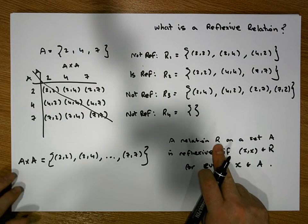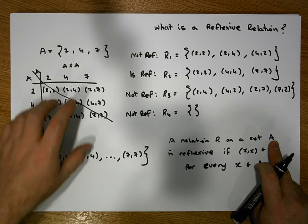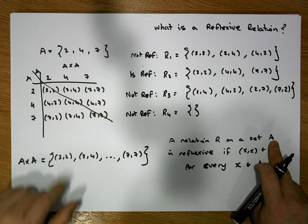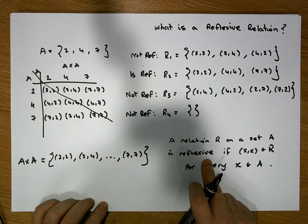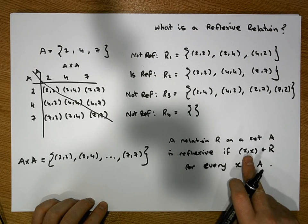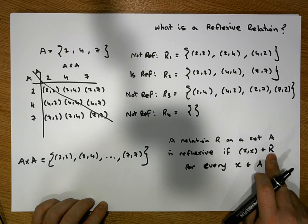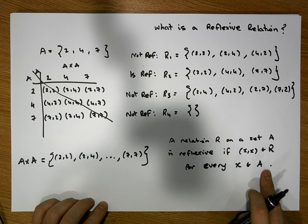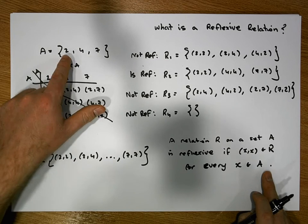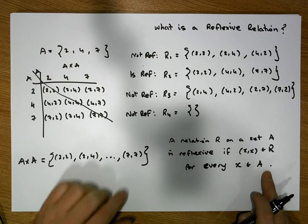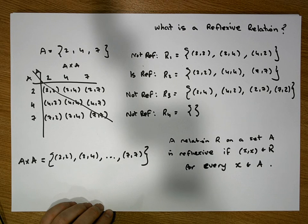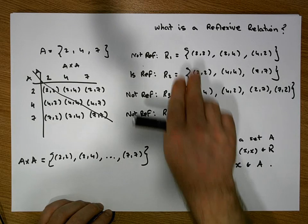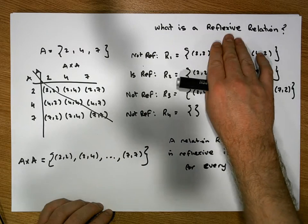To summarize: a relation R on a set A — taken from the cross product A cross A — is reflexive if we have the ordered pairs (x,x) in R for every x that's in A. Another way to say that is: for every x that's in A, the ordered pair (x,x) is in the relation. I hope this short video helps in understanding what a reflexive relation is.